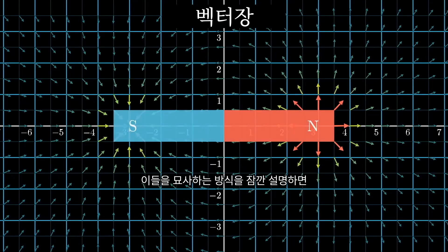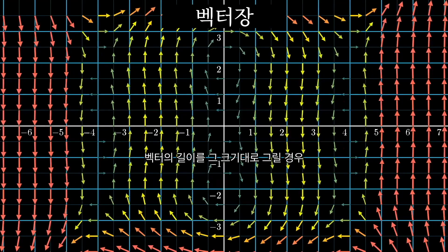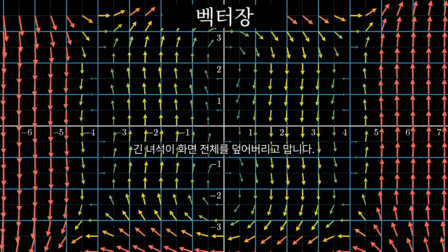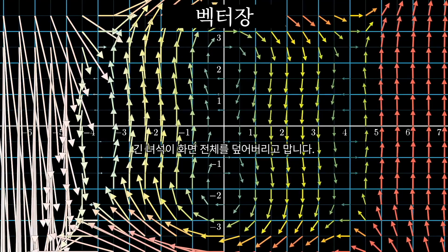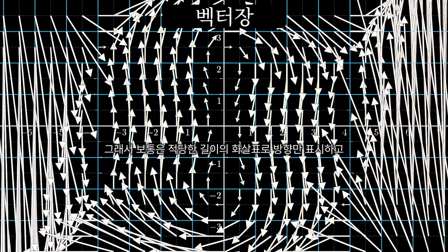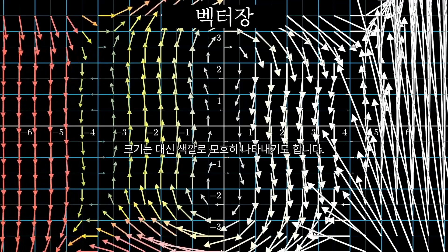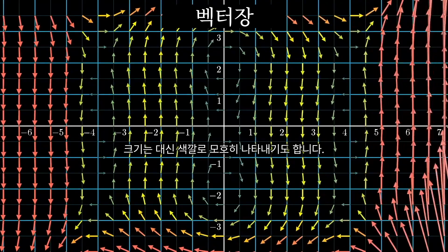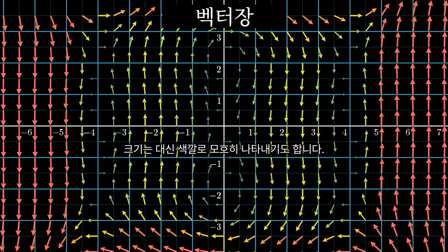Quick note on drawing these: often if you were to draw the vectors to scale, the longer ones end up just cluttering up the whole thing, so it's common to artificially shorten ones that are too long, maybe using color to give some vague sense of length.